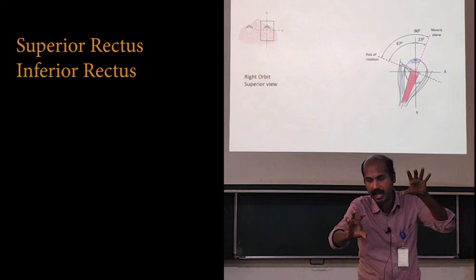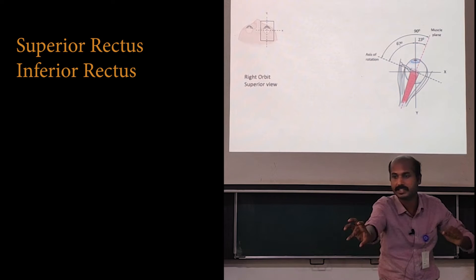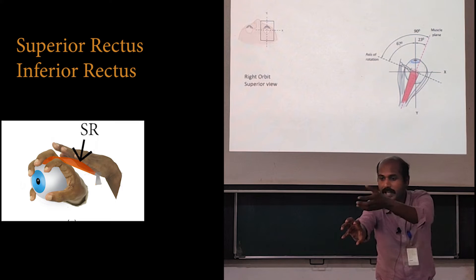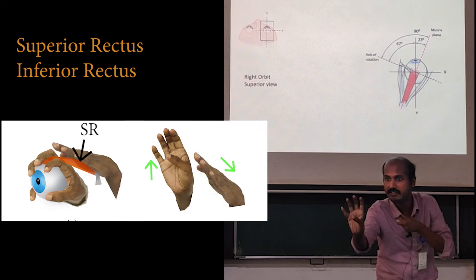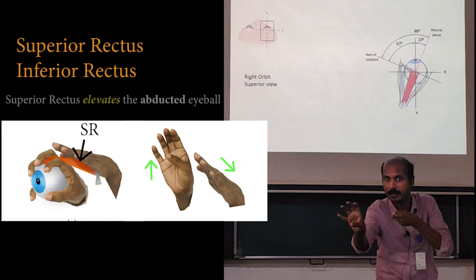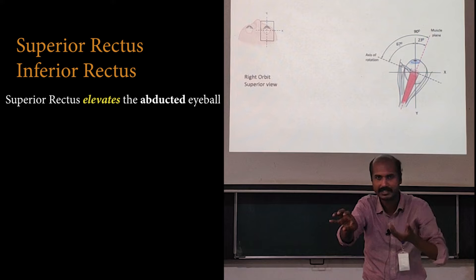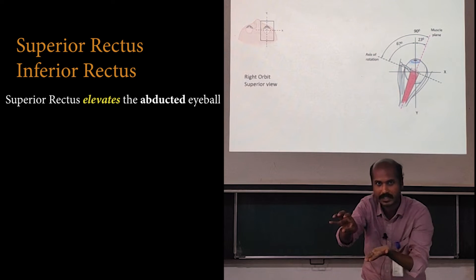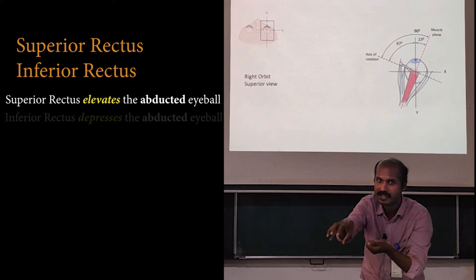Try to imagine that instead of primary gaze, the eyeball is abducted 23 degrees. In that situation, when the superior rectus contracts, it will cause elevation of the eyeball. Since the inferior rectus is parallel to the superior rectus but just below the optic nerve, when the inferior rectus contracts in the 23-degree abducted eyeball, it will cause depression.